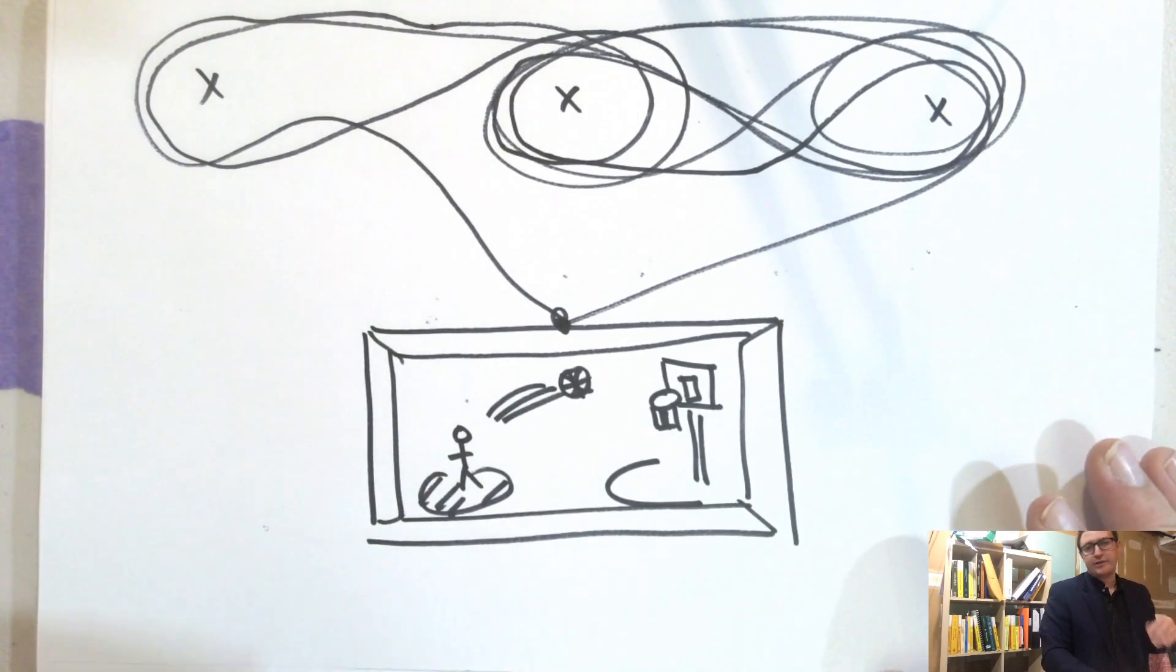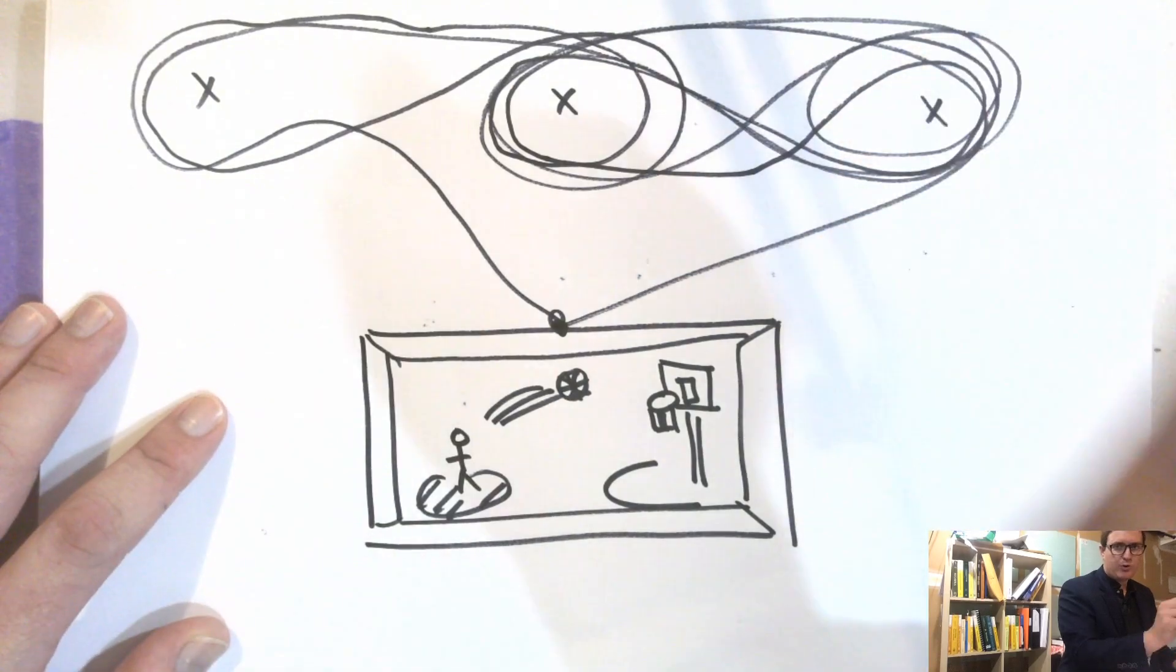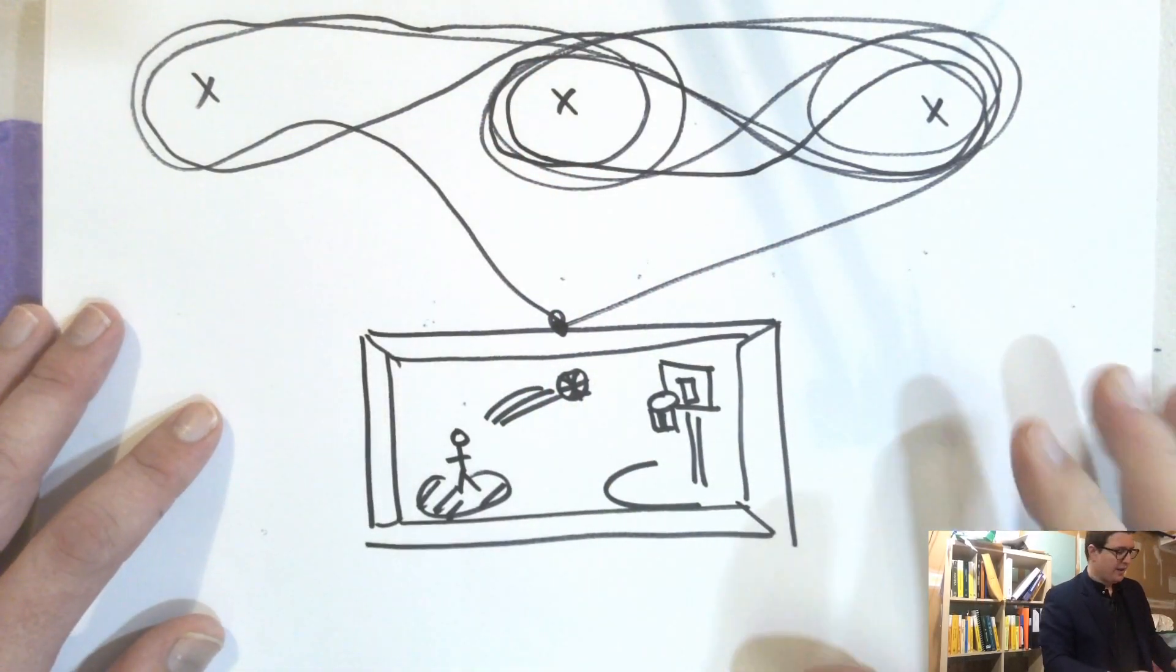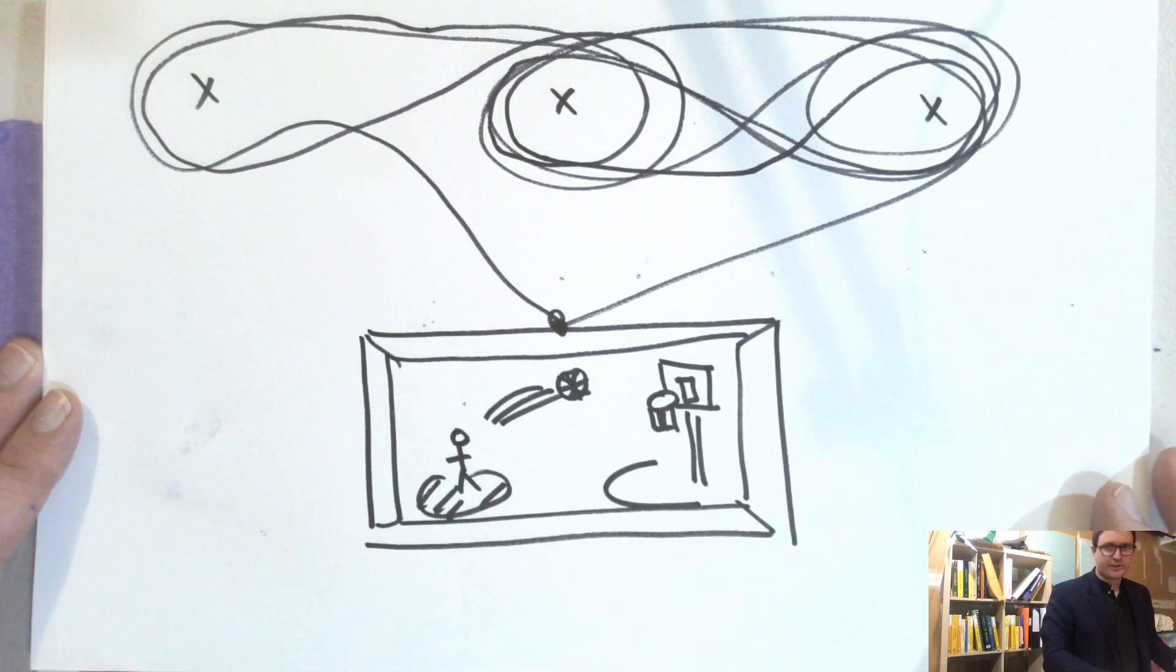The second thing that I want it to do is I want this picture so that if I remove any one of these nails, the picture will just fall to the ground. So I want it to just collapse.